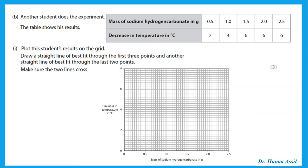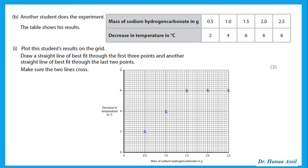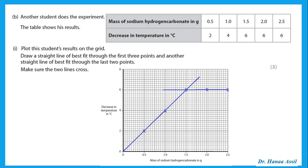Another student does the experiment and we are given another set of results, and we are told to plot the student's results on the grid. Draw a straight line of best fit through the first three points and another straight line of best fit through the last two points. When you plot the graph, the points have to be marked as very small crosses or dot-in-circle. Before joining, check how you are instructed to join them — here we draw two straight lines of best fit that cross each other. Make sure the two lines cross.